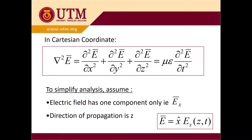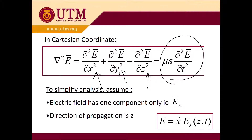When we expand in Cartesian coordinates, we have del-squared E divided by del-x-squared, with x, y, and z components. To simplify the analysis, we make an assumption: the electric field has only one component, for example E-x. The direction of propagation is z, so the E field has only the x component, as a function of time and propagation direction z, making the equation simpler.